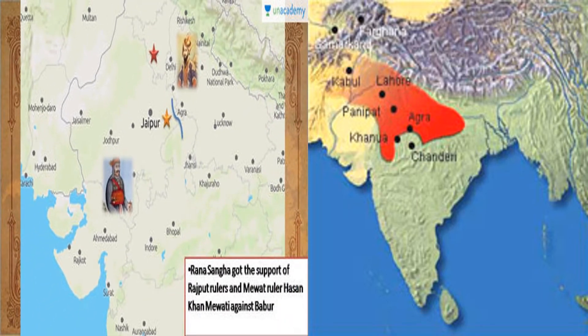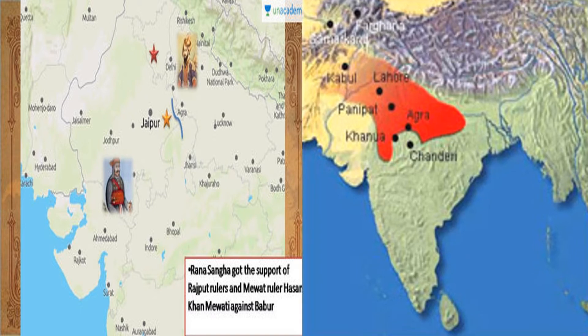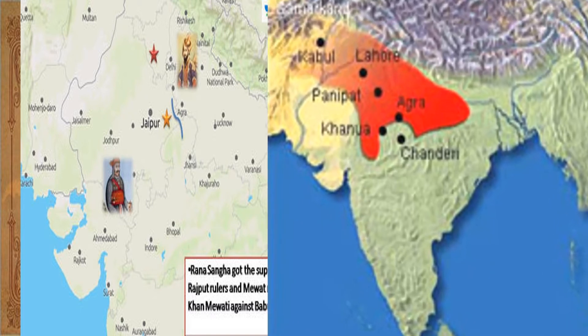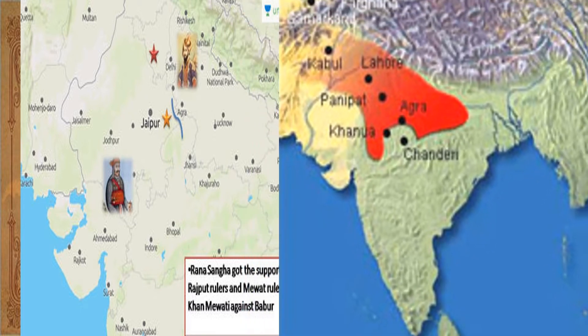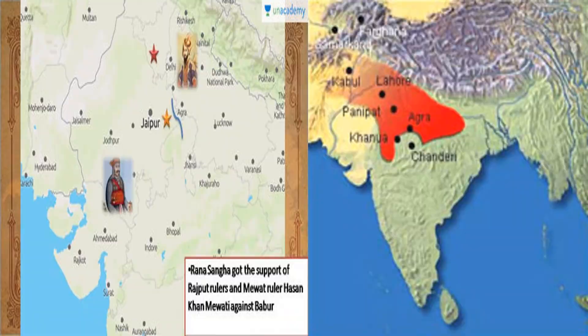In 1527, Babur defeated Rana Sangha at the battle of Khanwa, which is very close to, and southeast of, Agra. Then in 1528, he defeated the Chanderi Rajputs, which is south of Agra. Both locations are very close to Agra, which was the capital.